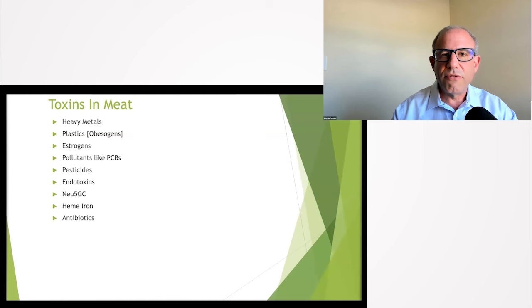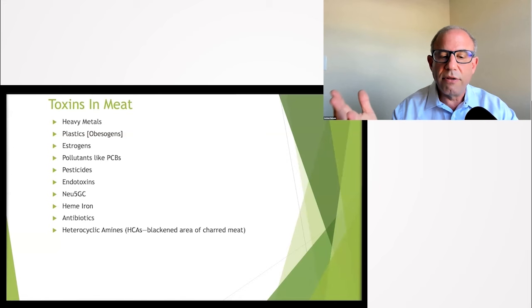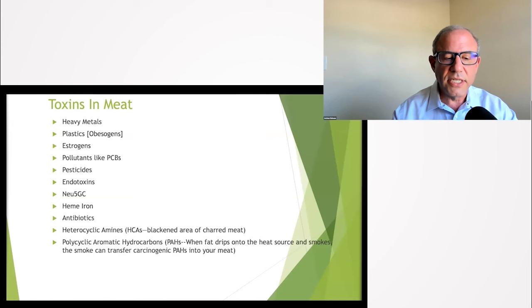Heme iron - iron in general is good but heme iron can be toxic and there's heme iron in animal products but not in plant products. Antibiotics - it's sad the largest user of antibiotics in our society is animals that are being factory raised. Antibiotics are used to increase the yield, but unfortunately if you give animals antibiotics and then you slaughter them, the people are going to get some of those antibiotics inside of them. When you cook meat it produces what are called heterocyclic amines, HCAs - they're the blackened area of charred meat. And another in the same category are called PAHs, polycyclic aromatic hydrocarbons.